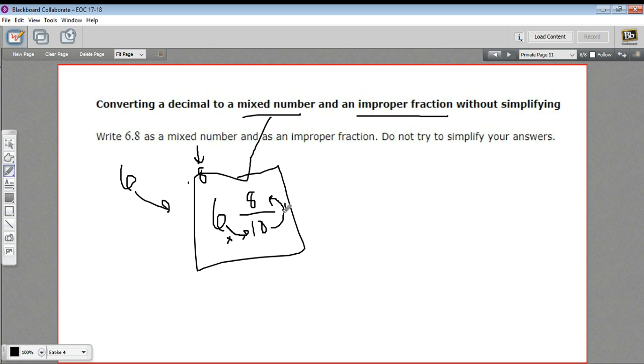So 6 times 10 is 60, and you add it to 8, that would be 68 tenths. And that would be the improper fraction.